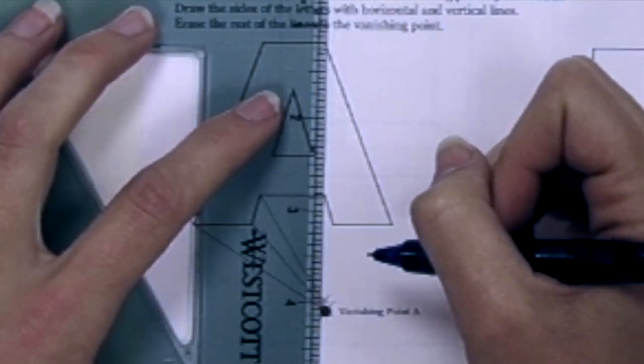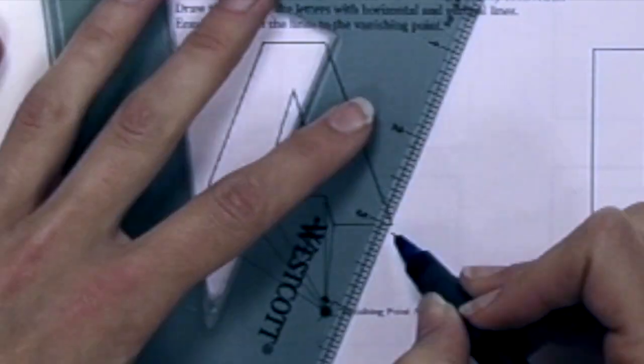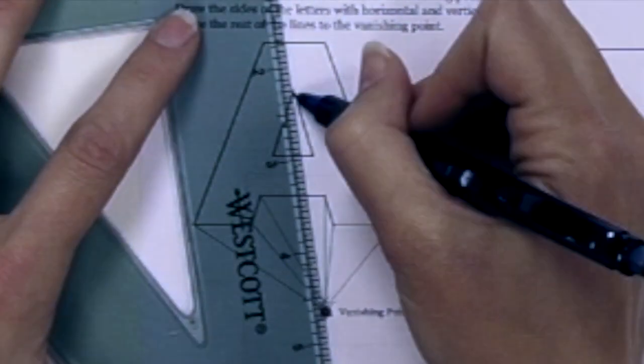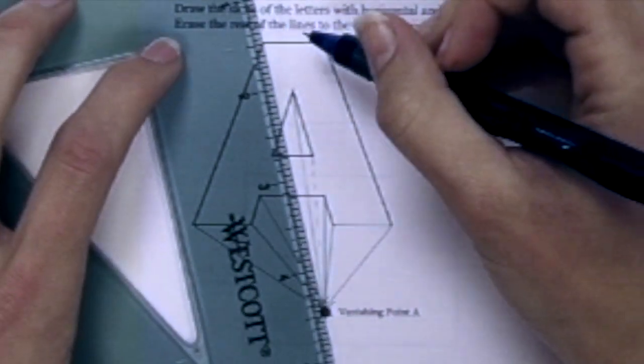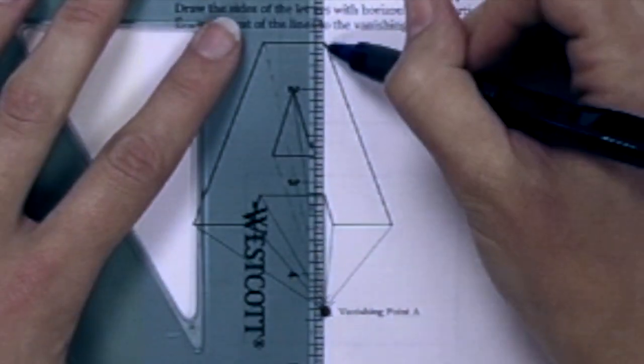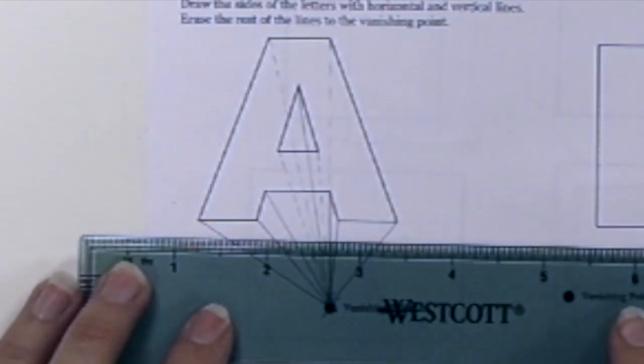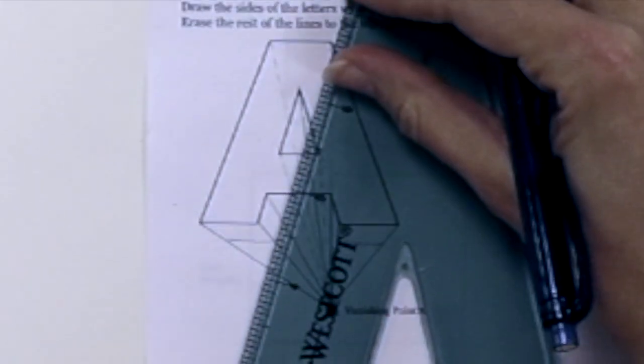Letters in one-point perspective. The letter A is a little tricky because it has all these angles in it, but I'll still start the same way, looking for everywhere there's a corner or a point and connecting those lines back to the vanishing point. The dotted lines are to represent lines you wouldn't be able to see if the A was solid.